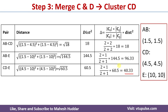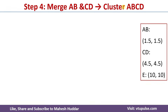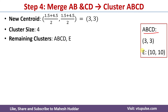Once we find the merging cost for all pairs, we identify which has the minimum. The AB-CD pair has the minimum merging cost of 18, so we merge these two to get the new cluster ABCD. The new centroid is (1.5+4.5)/2 and (1.5+4.5)/2, which equals (3, 3). This cluster contains 4 data points so the cluster size is 4, and the remaining clusters are ABCD and E.